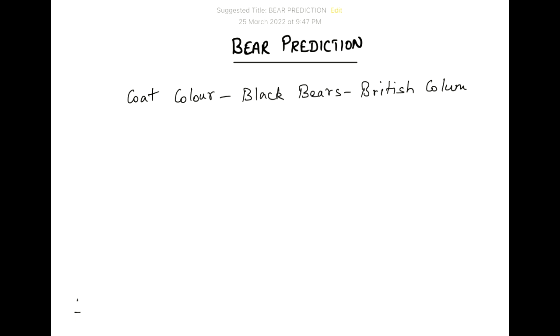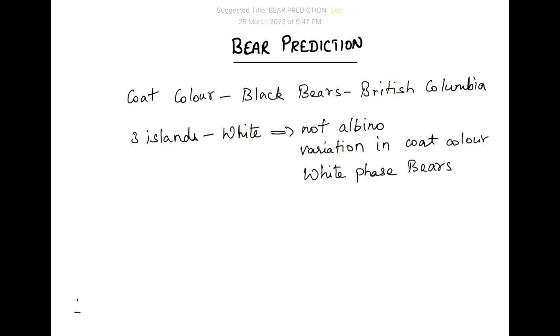All the bears have black color coat, which is why the name, except for three islands where the bears have white coat color. The white coat is not albino but is a variation of coat color. This variation in coat color is called white face bears or they are also called kermode bears.